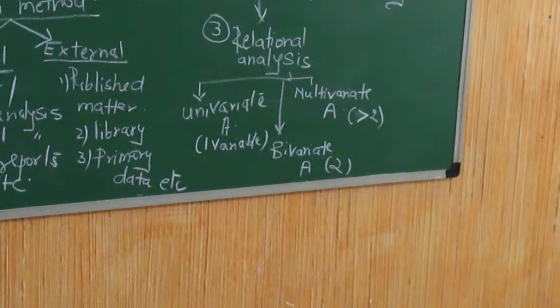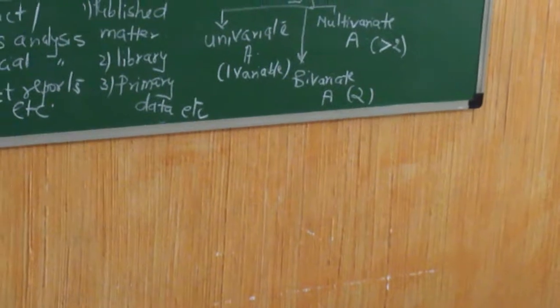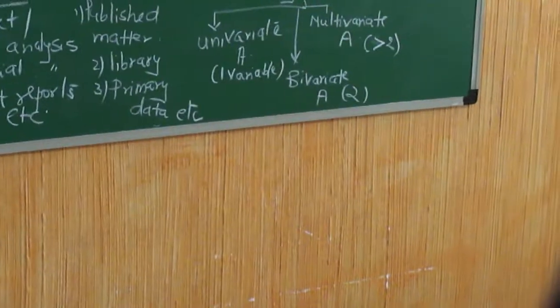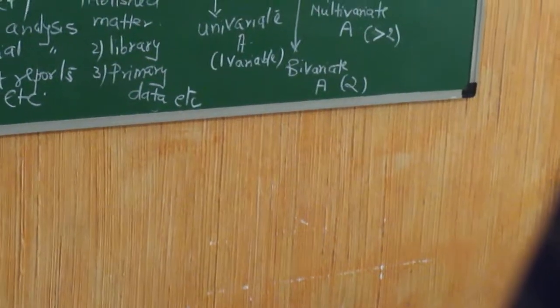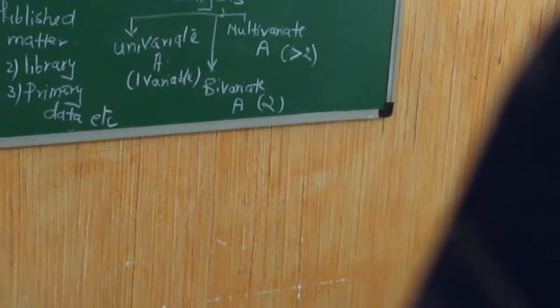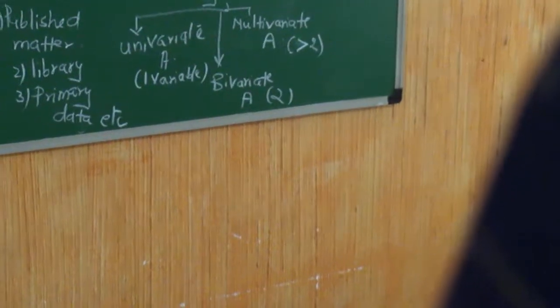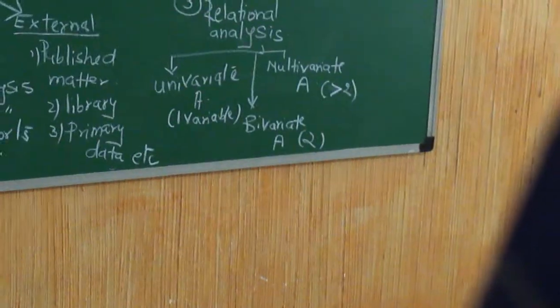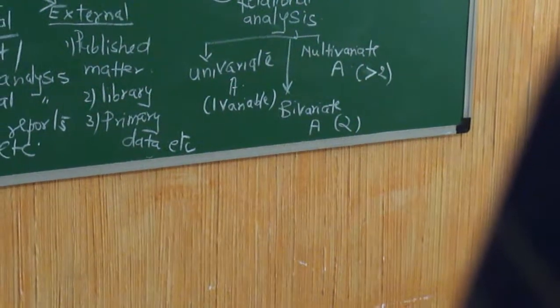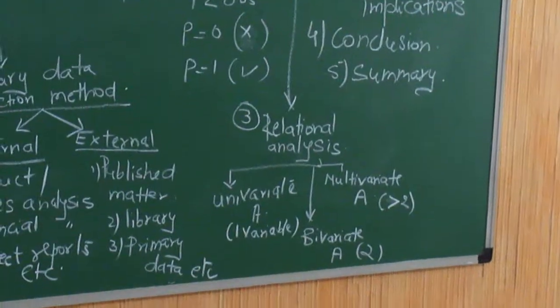Then comes the third one, that is relational analysis. Under this, you have univariate analysis. Here, there is one variable only. For example, murder. So you decide that he is a murderer. Second bivariate, there are two variables here. He is a murderer and he is also mean. The third is multivariate analysis, when more than three variables are there. For example, he is a murderer, he was mean, and he also carried a gun. So it's quite intentional. So such type of analysis is carried about.